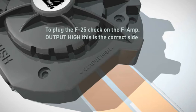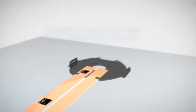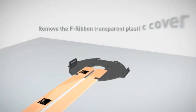Now we have to plug in the F-25 and the F-sub. To plug the F-25 check on the F-Amp output high. This is the correct side. We strongly recommend that you remove the F-ribbon transparent plastic cover.